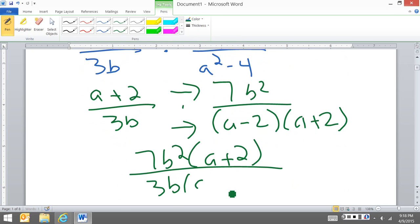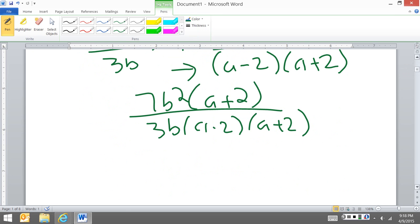Now I'm going to look through and see what can I cancel out. Well, a plus 2 cancels with a plus 2, and then I have b squared and b, so using exponent rules, I'm left with b to the (2 minus 1), or b. So I have 7b over 3(a minus 2).